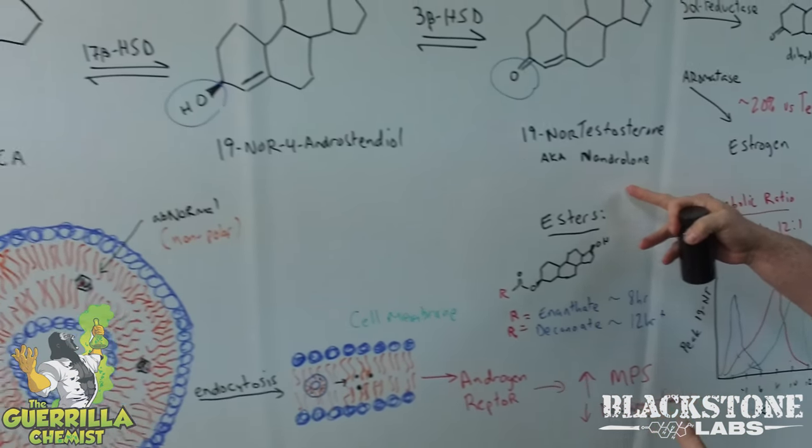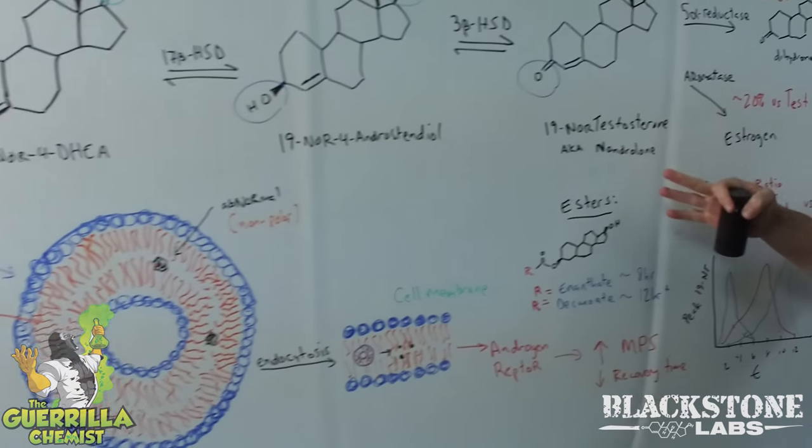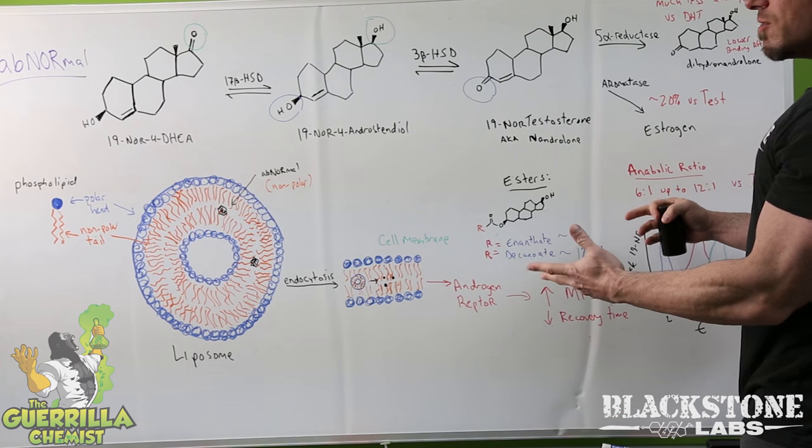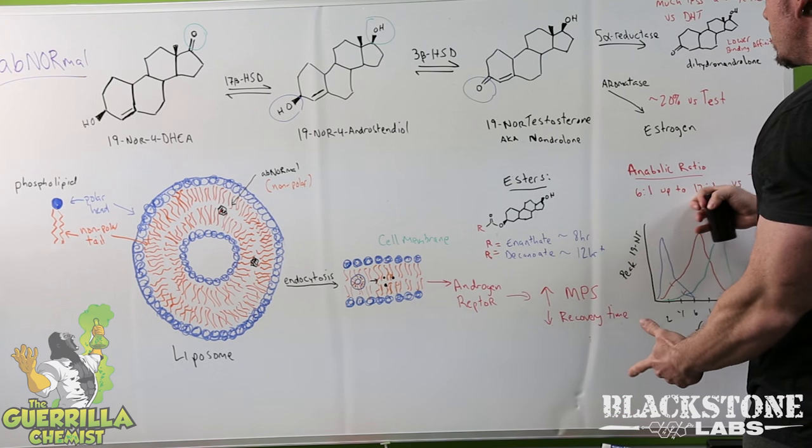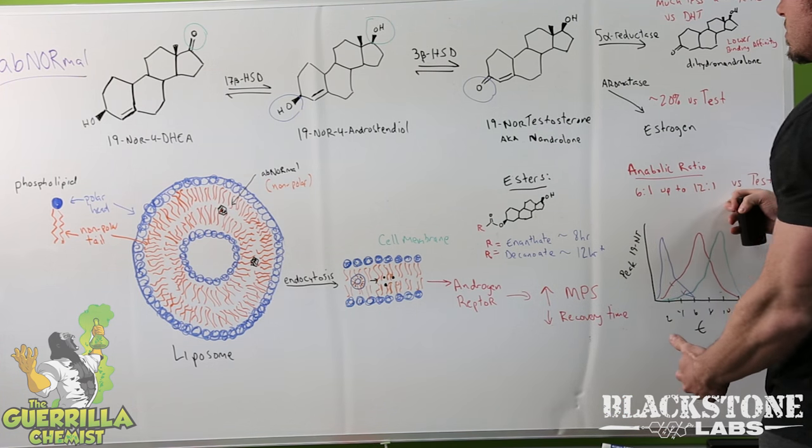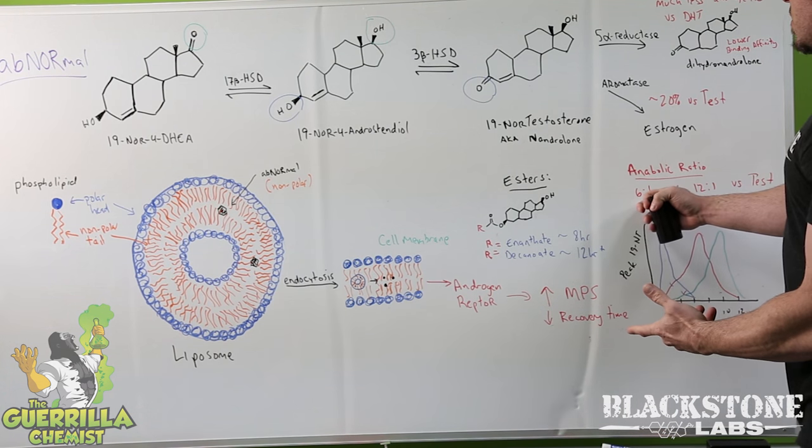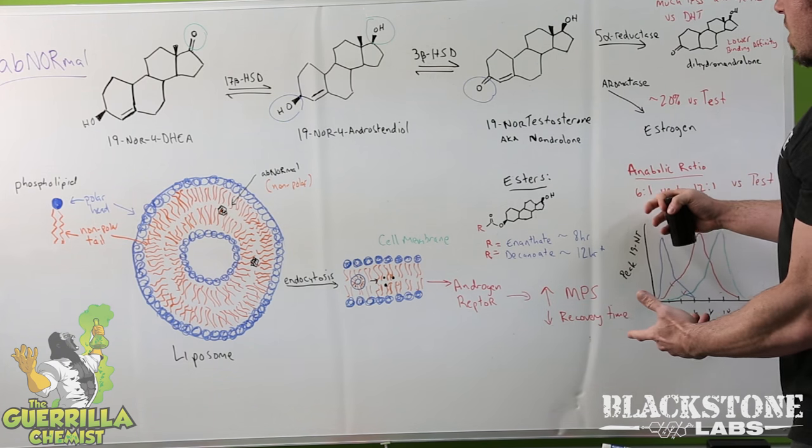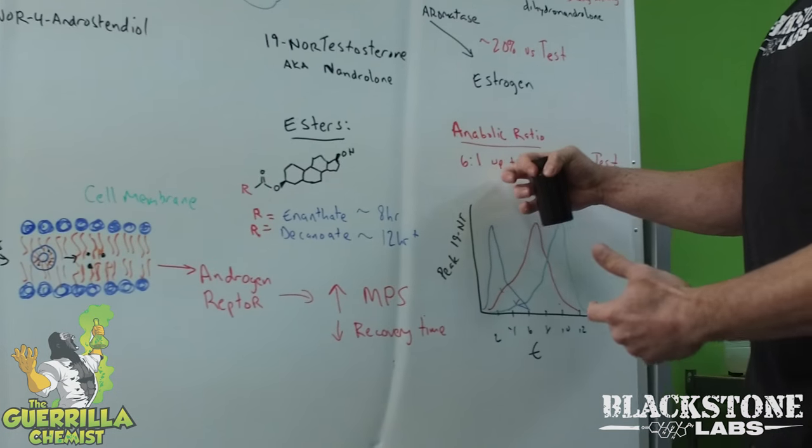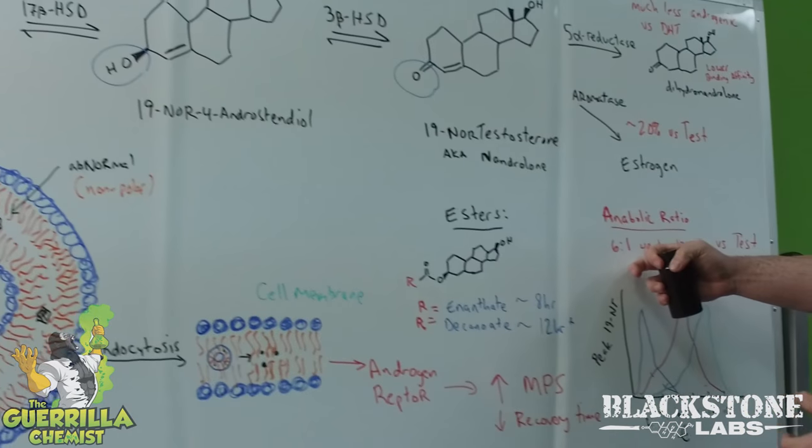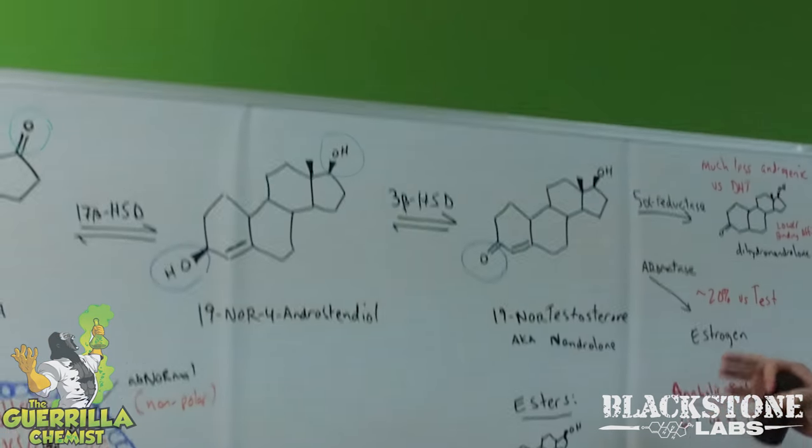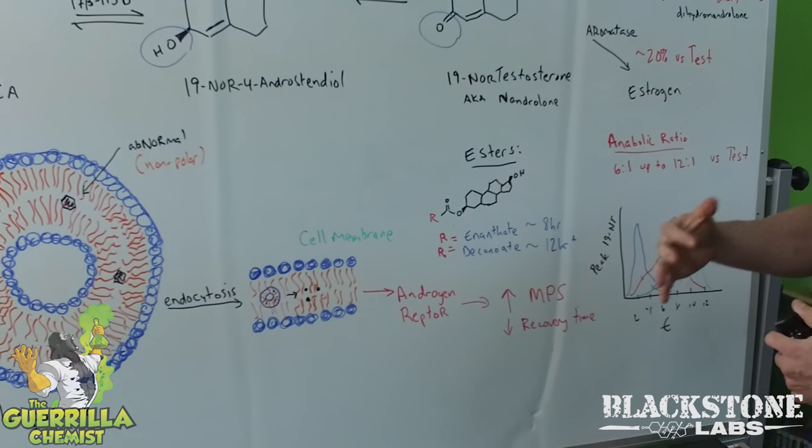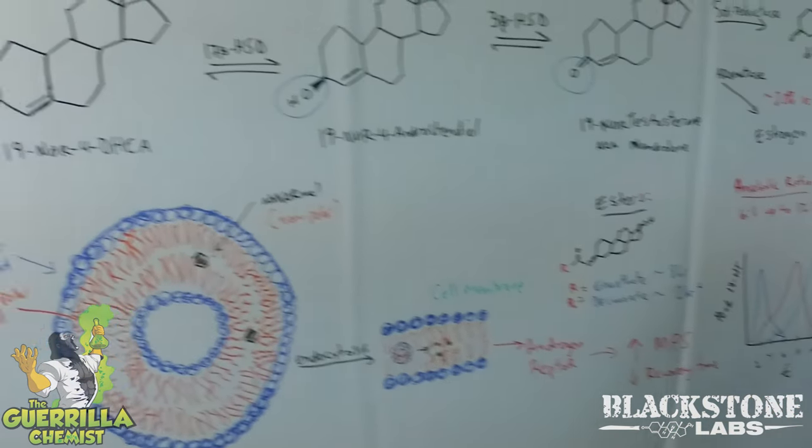Some of you may know it as nandrolone. Nandrolone is a very, very anabolic molecule. It has an anabolic to androgenic ratio of anywhere from 6:1 up to 12:1 versus testosterone. That means it's up to 6 to 12 times more anabolic than testosterone while maintaining the same androgenic effect. This compound is mostly focusing on building lean muscle tissue rather than the androgenic side effects that you get from Chosen Force or DHT.